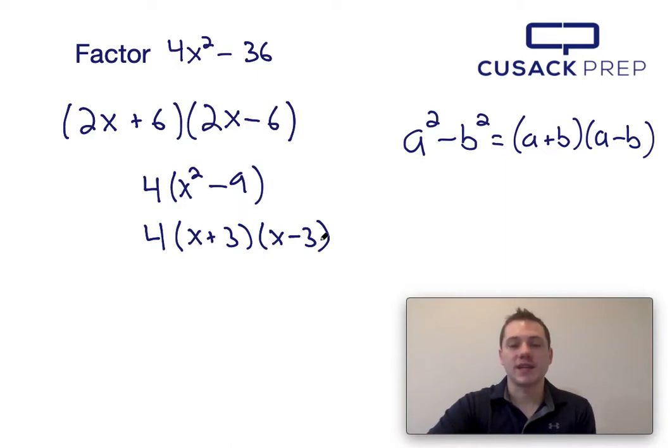And there you have it - that's how you factor 4x squared minus 36 using the difference of squares equation.